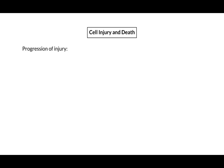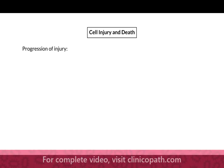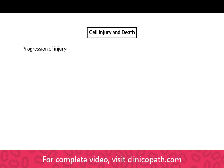In previous lectures in general pathology we've developed this model of the progression of injury. When we start with some sort of change in the internal or external environment, the normal response of the body is physiologic, and that physiologic response is called homeostasis. Homeostasis really refers to a dynamic range in which there is a regulated variable and responses to bring it back into the normal level.